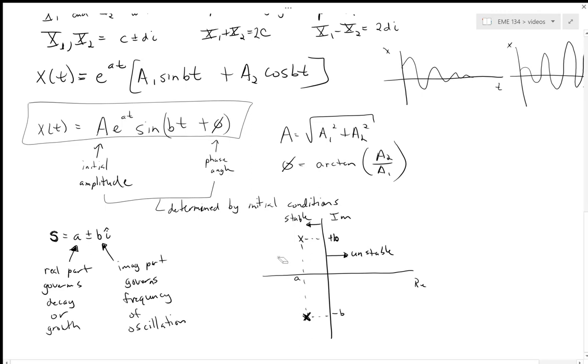And then this b value—how far away—if they're further away from the real axis, they're going to have higher frequency. As these are moved away from the axis, you get higher frequency, and the closer they are to the real axis, you get lower frequency.